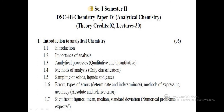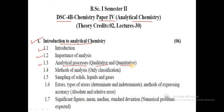In this unit, for paper number 4 analytical chemistry, the code number is DSC4B. The first unit is introduction to analytical chemistry, which consists of: first, an introductory part; second, importance of analysis; and third, the analytical process — that is, qualitative and quantitative analysis.